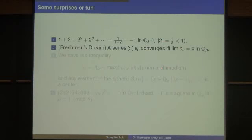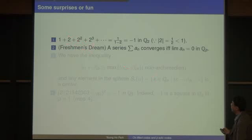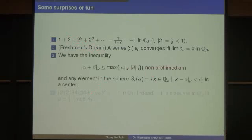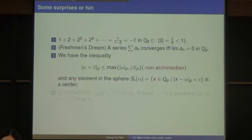In Q_p where p is finite, a series sum of a_n converges if and only if the limit is 0 — this is called the freshman's dream. We also have the non-Archimedean property: the absolute value of A plus B is less than or equal to the maximum of the two individual absolute values. And any element in a sphere is a center of the sphere.